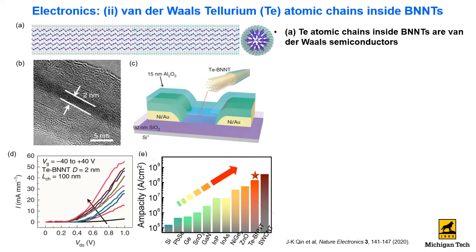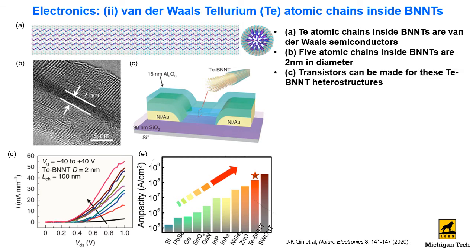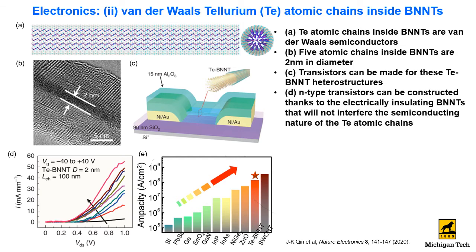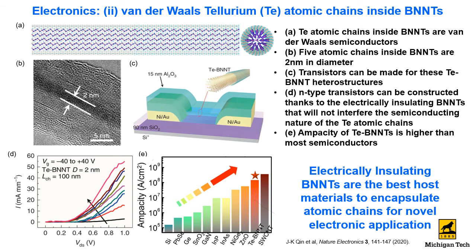Our results suggest that tellurium atomic chains inside BNNTs are narrow-wall semiconductors. For example, 5 atomic chains inside BNNTs are 2 nm in diameter. Transistors can be made by these tellurium-BNNT heterostructures thanks to the electrically insulating nature of the nanotubes, which does not interfere with the semiconducting nature of the tellurium atoms. The ampacity of tellurium BNNTs is higher than most semiconductors, so electrically insulating BNNTs are the best host materials to encapsulate atomic chains for nanoelectronics applications.